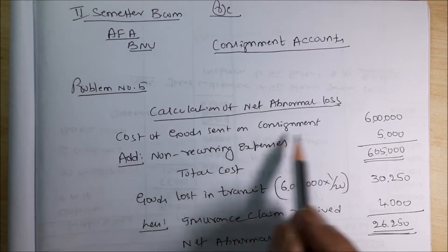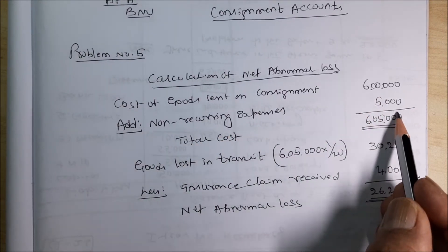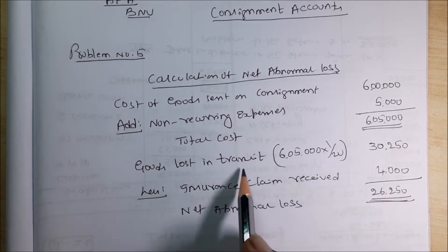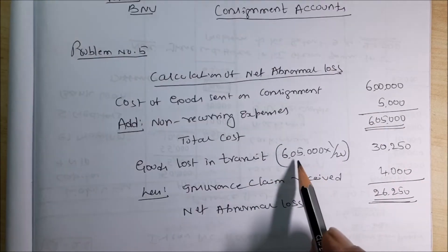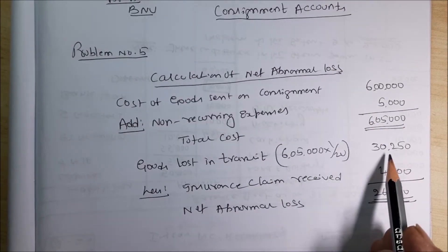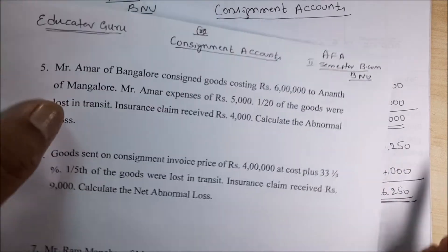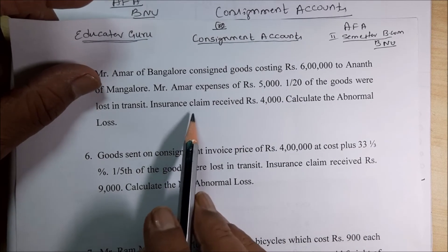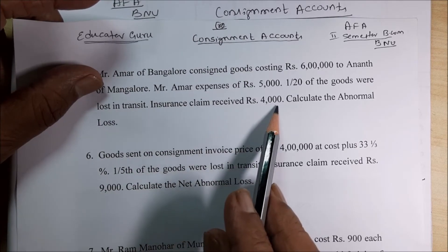Very simple calculation of abnormal loss. Cost of goods sent on consignment: 6 lakhs. Add non-recurring expenses: 5000. Total comes to 6,05,000. Total goods lost in transit: 1 by 20 of the goods were lost in transit. So, 6,05,000 into 1 by 20 equals 30,250. But they have made insurance — that means they have taken insurance.